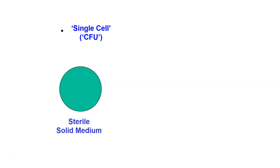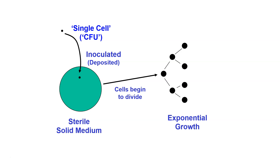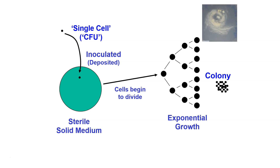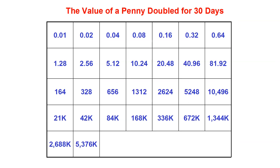When growing these organisms, we start with a single cell or a single colony-forming unit, deposit it onto a sterile solid medium, and the cells pick up nutrients and begin to divide. We get exponential growth — one becomes two, two become four, four become eight — and they go together to form what we call a colony. A colony is nothing more than a mass of cells. Looking at these colonies, you can see they are all different just by looking at them, and each one is made up of probably millions of bacterial cells.